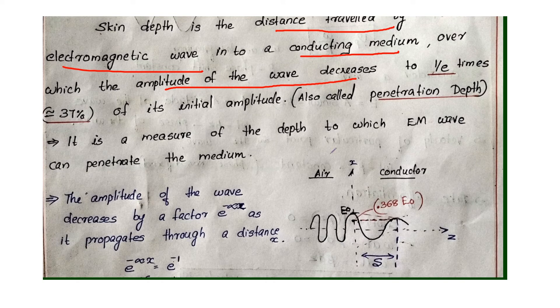Now let's look at the figure. Here is an electromagnetic wave that moves into a conductor. When the wave moves into a conductor, the amplitude decreases.